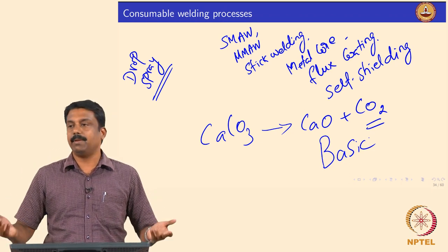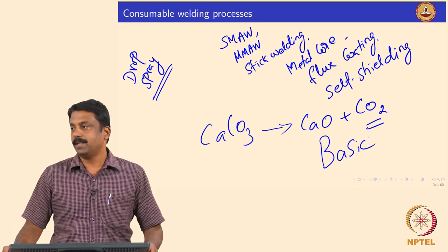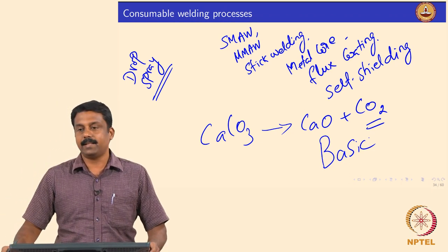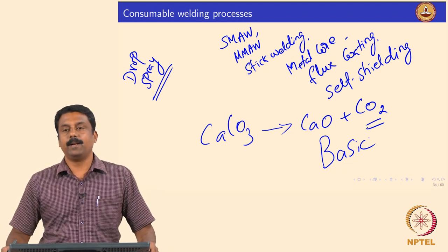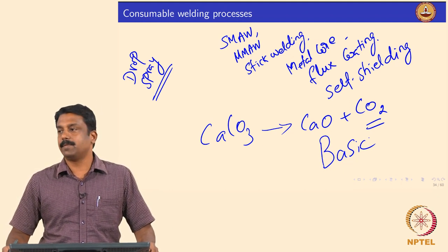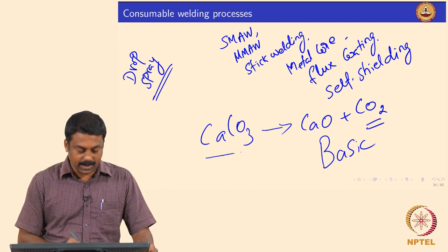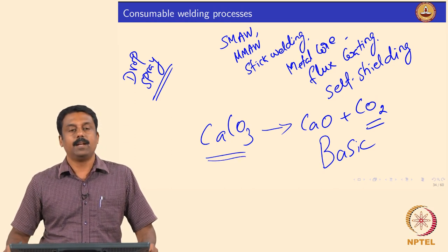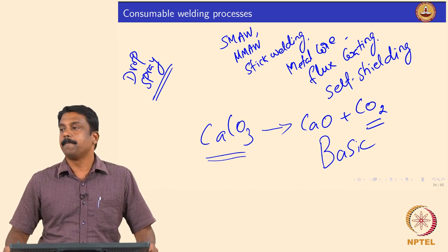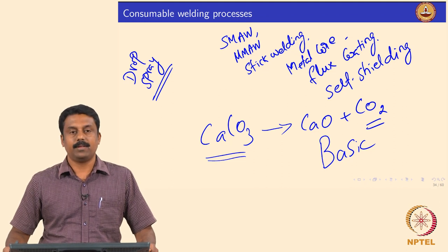If the flux composition is predominantly calcium carbonate, these fluxes are known as basic fluxes — similar to the concept used in steelmaking with basic and acidic slags. If the flux contains primarily calcium carbonate, the slag is basic.